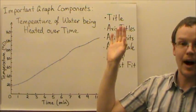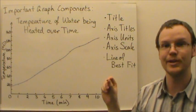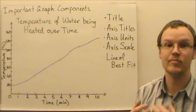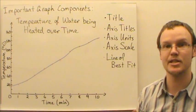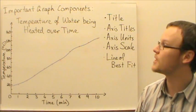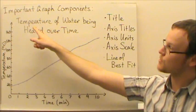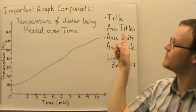The different components that need to be included in a graph, especially if you're trying to communicate some scientific data that you've collected in an experiment or some mathematical data you might have collected in an experiment, include a title. The title of this graph is the temperature of water being heated over time.